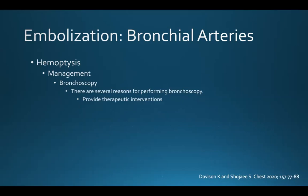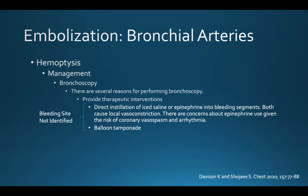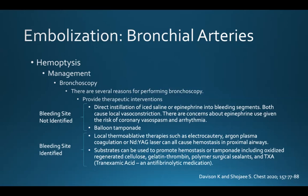In addition, bronchoscopy enables several therapeutic interventions. If a bleeding site is not identified, the pulmonologist can directly instill ice saline or epinephrine into bleeding segments — both can cause local vasoconstriction, though there are concerns about epinephrine use given the risk of coronary vasospasm and arrhythmia. Balloon tamponade can also be performed to isolate the bleeding into one segment or lobe of the lung. If the bleeding site is identified, local thermo-ablative therapies can be offered, such as electrocautery, argon plasma coagulation, or laser coagulation, because these can all cause hemostasis in proximal airways.